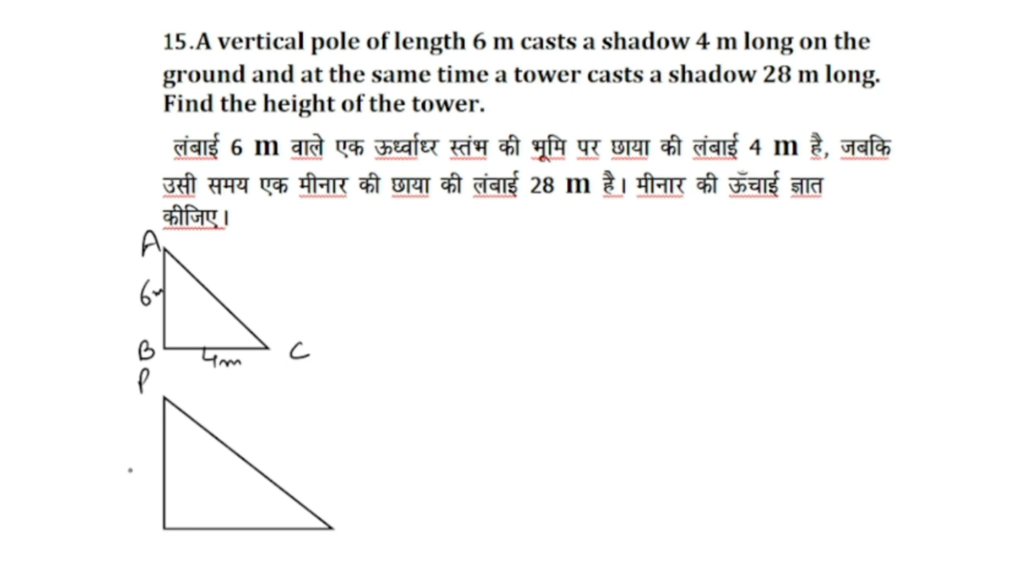Here we have triangle PQR. We have said that the shadow is 28 meters long. So we have the height of the pole.